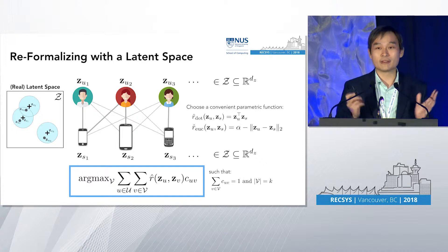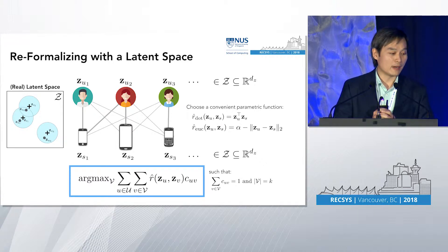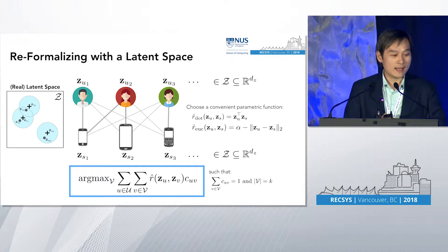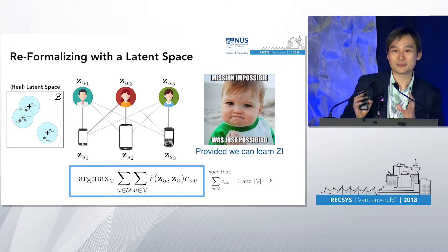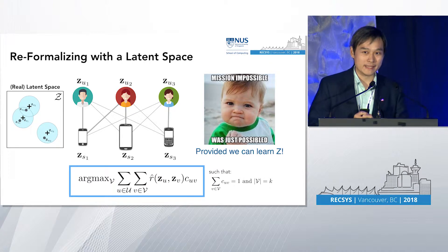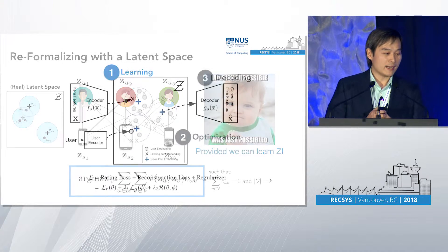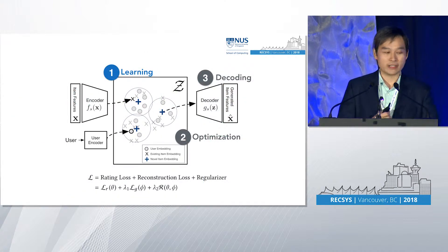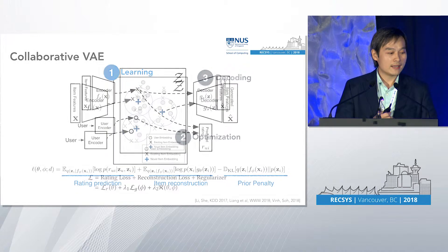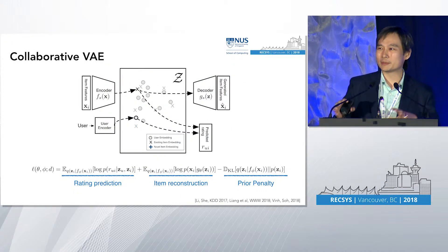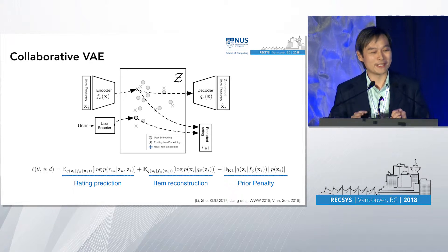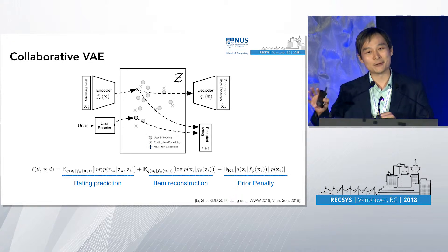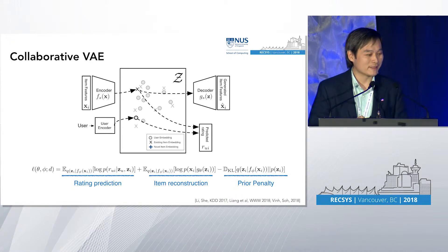We're going to search in this real vector space in order to find our items that we want to produce. So our impossible problem has just become maybe more possible, provided we can learn Z. The way we're going to learn Z is to leverage deep generative models. There are three steps: a learning step, an optimization step, and a decoding step.